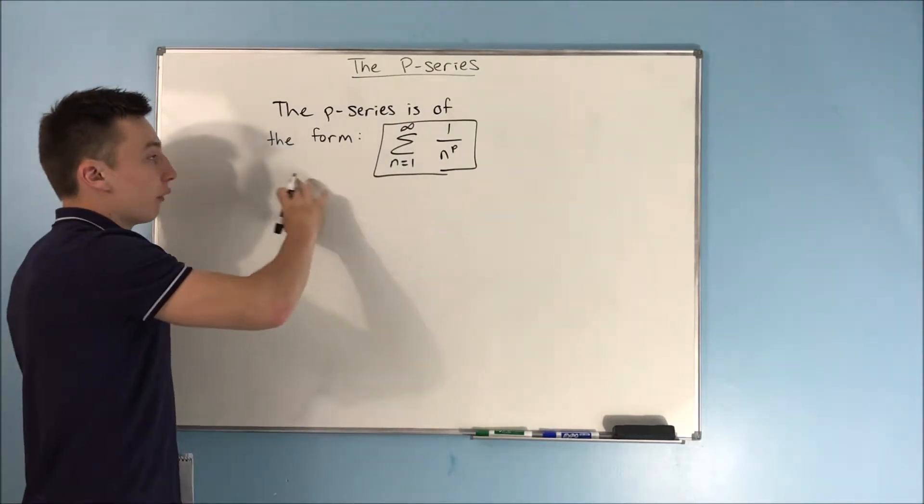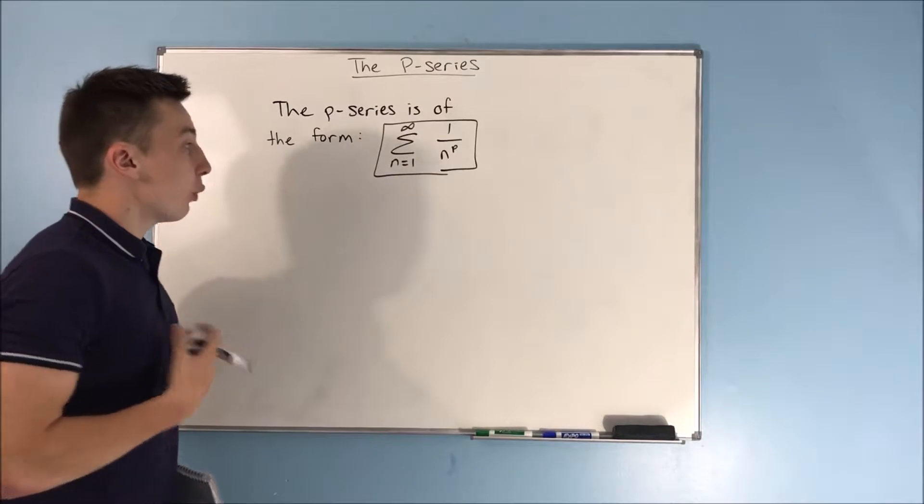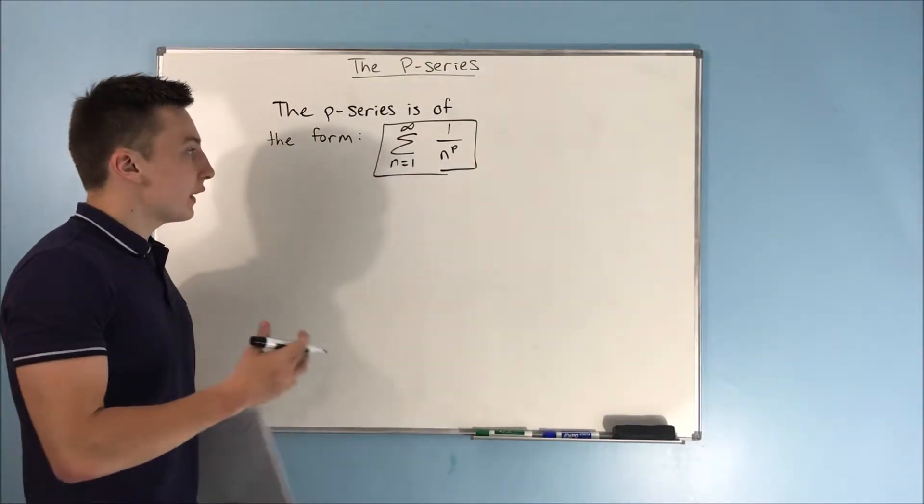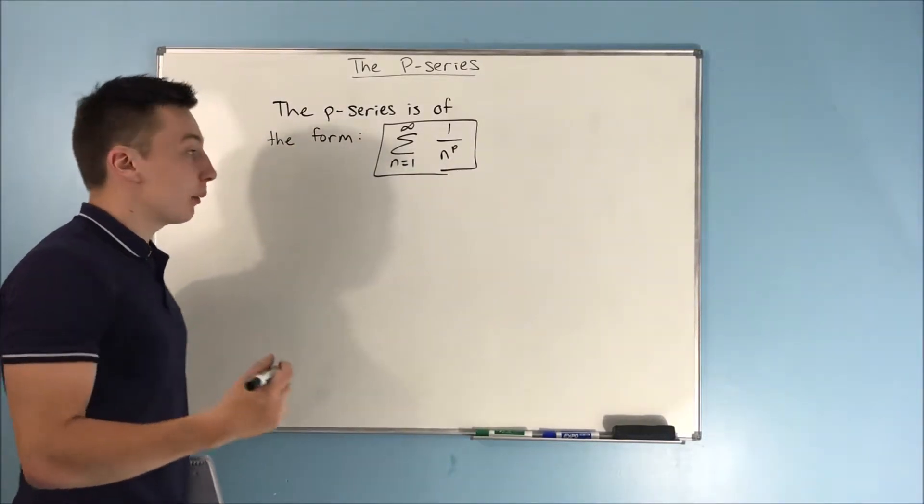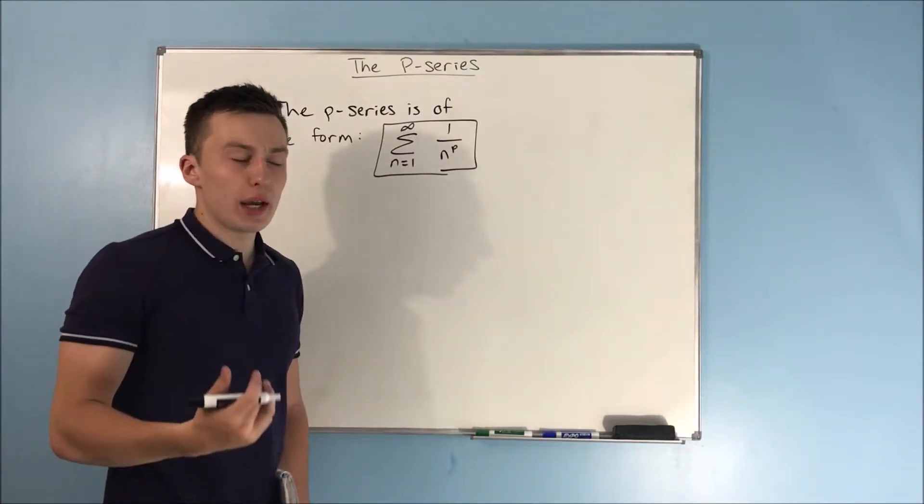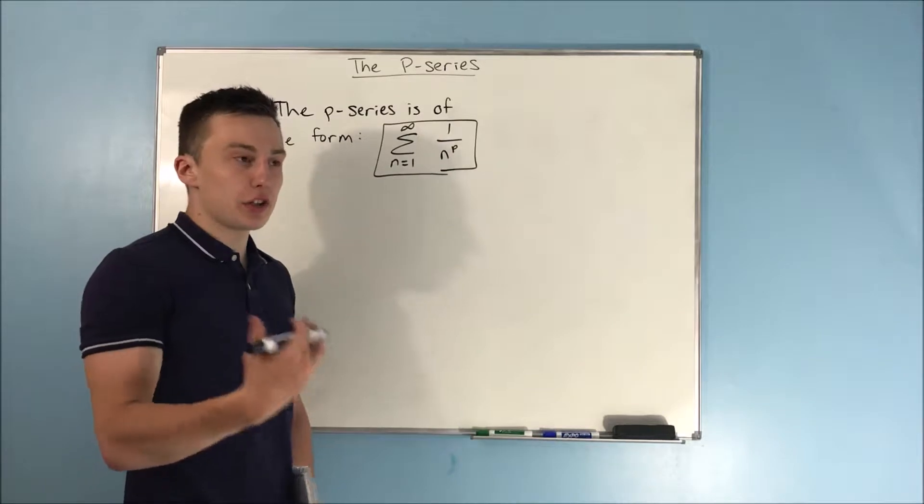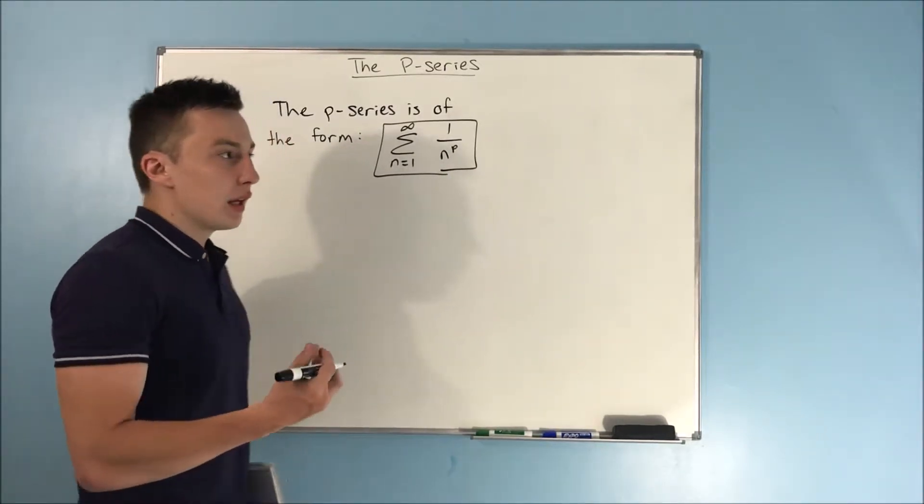So, the p-series is of the form the sum from n equals 1 to infinity of 1 over n to the p. And this p right here, that's going to determine whether this whole series is convergent or divergent. It's kind of like the r in a geometric series - it determines whether the whole series is convergent or divergent.